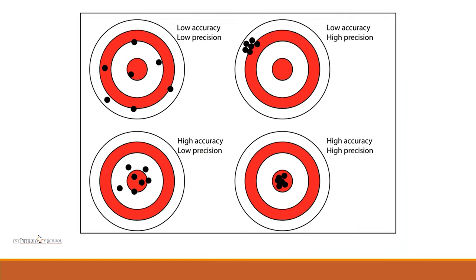Precision is the closeness of the values in serial testing of the same specimen of the patient — that means how many times you get the same value on the test. This bullseye diagram shows a better picture of accuracy and precision. In the first picture, black dots are scattered far away, showing low accuracy and low precision. The second picture shows low accuracy but high precision because the dots are crowded together but do not hit the target. The third picture shows high accuracy but low precision — hitting the target but scattered. The final picture shows high accuracy and high precision.